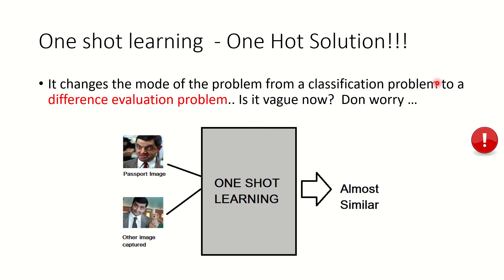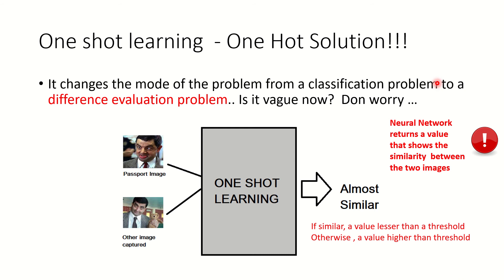One-shot learning is the solution we have in hand. It changes the mode of the problem from a classification problem to a difference evaluation problem. I've got the passport image and the real image of the person standing in front of you. Now I need to understand if they are the same. One-shot learning will tell you if they are similar or not. The system we design is essentially a neural network that will return a value showing the similarity between the two images. If similar, a value lesser than a specified threshold will be presented; otherwise, a value higher than the threshold will be presented. So you will obviously know if both images are the same.